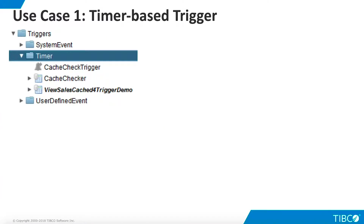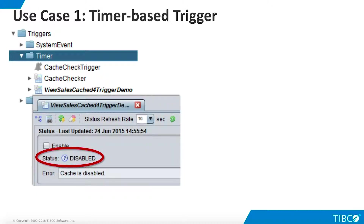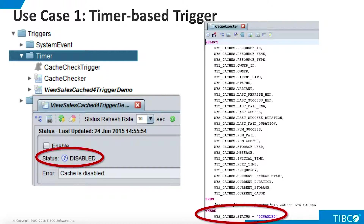We are ready to begin our demo. In our first use case, a system administrator wants TDV to check periodically for any disabled caches. If disabled caches are present, they will be reported to the system administrator via email. To prepare this use case, we have built a simple cached view and then disabled the cache.